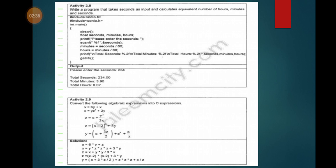Now here, float second, minutes, and hours. First printf statement: please enter the seconds. After that, modulo f, and this is the scanf statement. Then in minutes, seconds divided by 60.